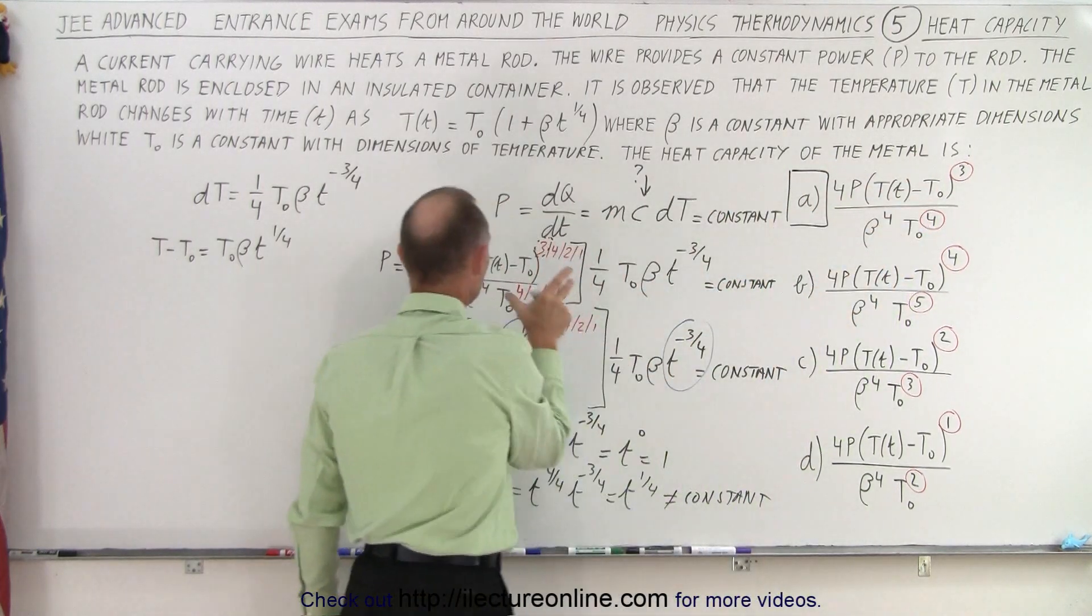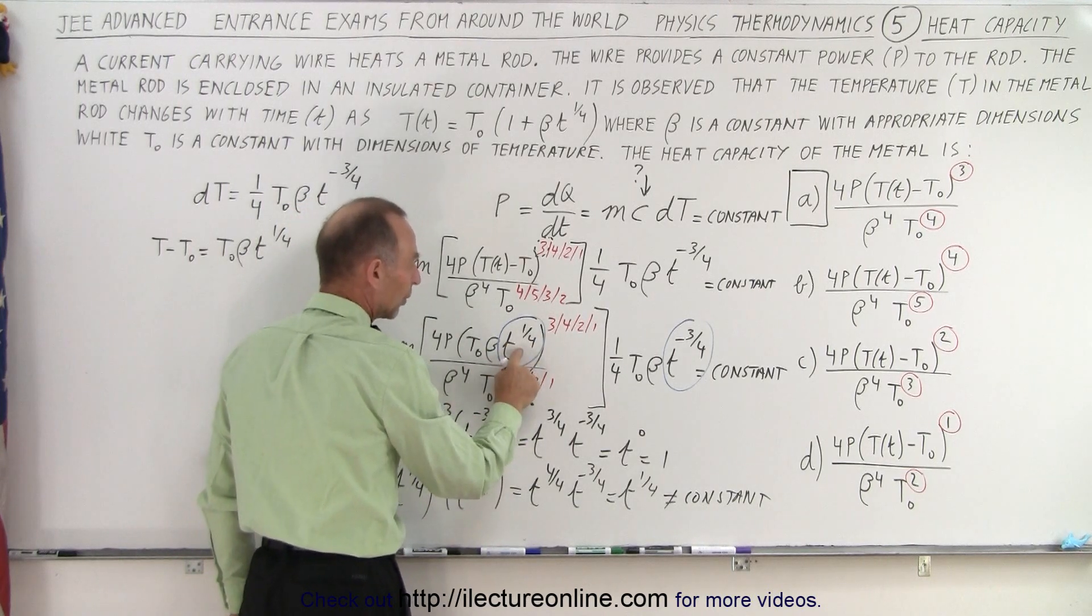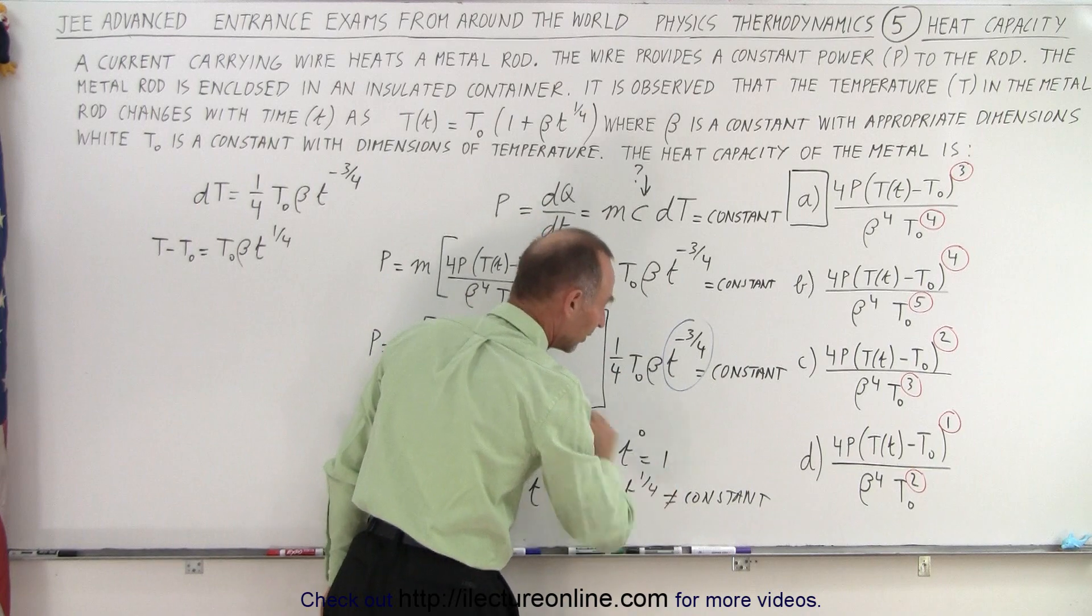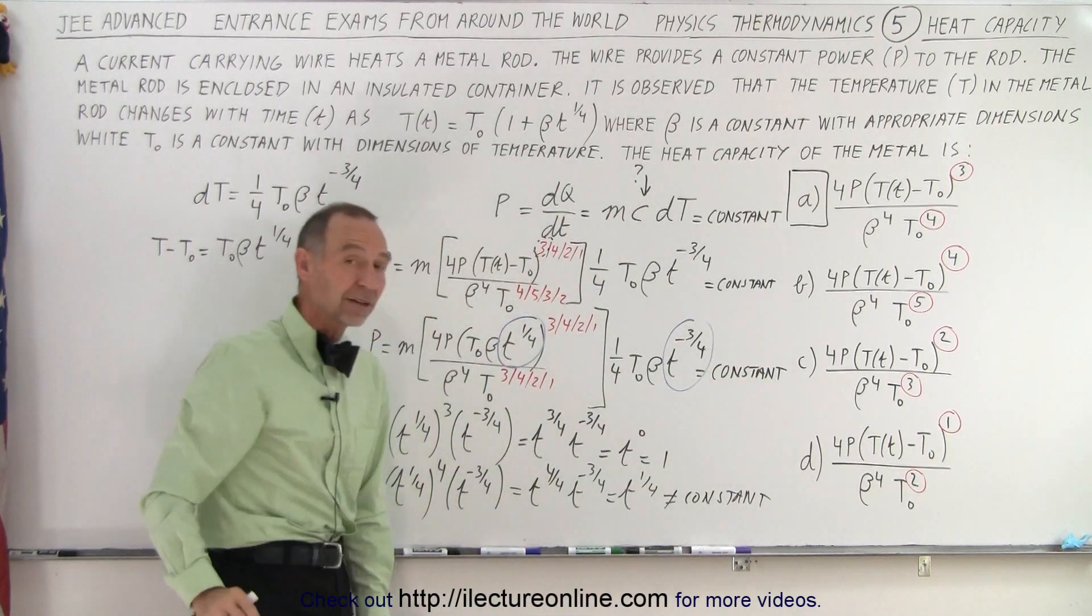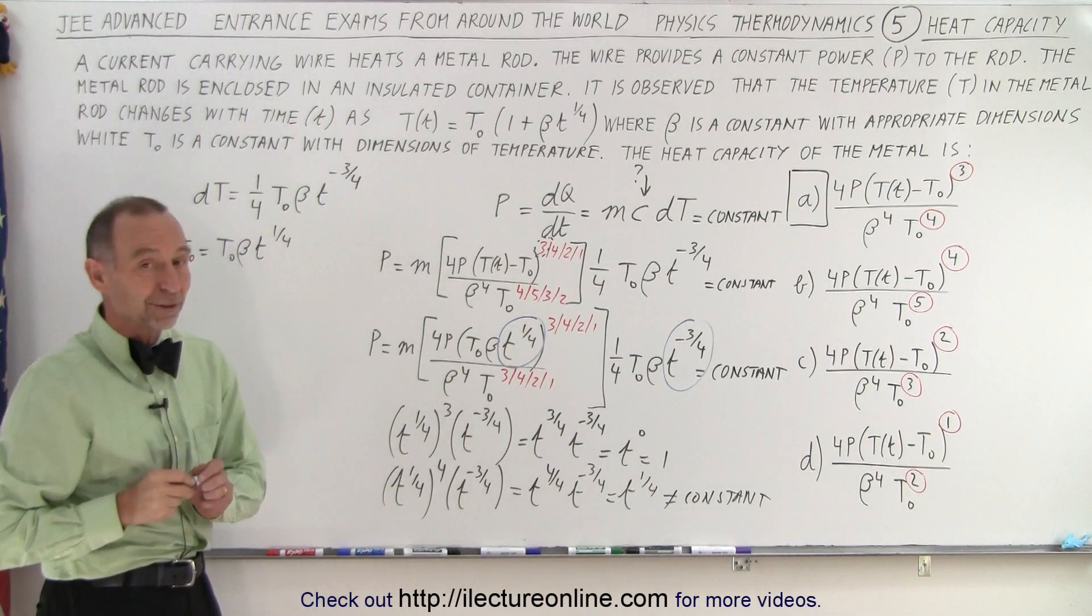If I plug this into here and I use the exponent 3, then t to the 1 fourth raised to the third power times t to the minus three quarter power become a constant, and then the whole thing on the right side is a constant, and therefore that must be the right answer. A is the correct answer.